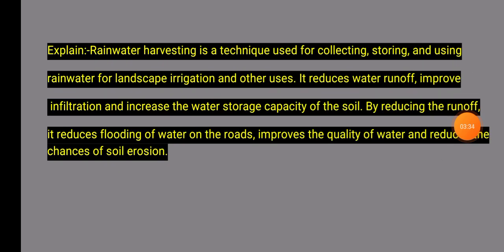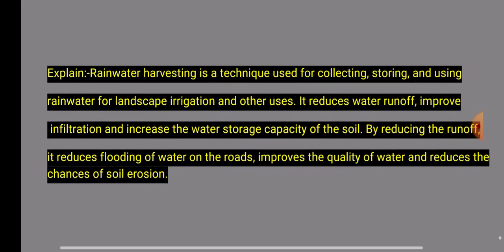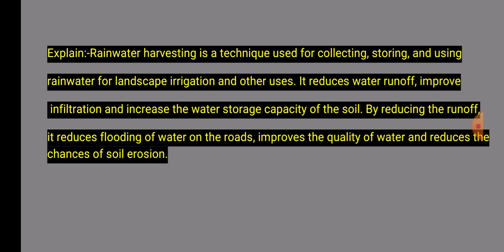Question 43 Explanation: Rainwater harvesting is a technique for collecting, storing, and using rainwater for irrigation and other uses. It reduces water runoff, improves infiltration, and increases the water storage capacity of the soil. By reducing runoff it also reduces flooding, improves water quality, and reduces the chance of soil erosion.